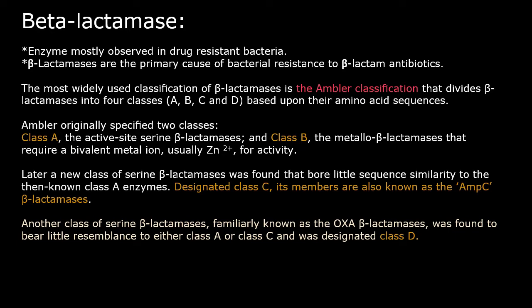The enzyme beta-lactamase is mostly observed in drug resistant bacteria. Beta-lactamases are the primary cause of bacterial resistance to beta-lactam antibiotics, as this enzyme breaks down the beta-lactam ring and inactivates the beta-lactam antibiotics. That is the mechanism for resistance. Bacteria are gaining this resistance and now it is a global issue — how to deal with drug resistant bacteria and how to treat these infections with the present antibiotics.